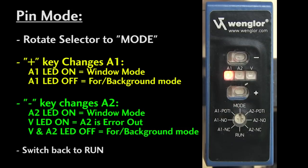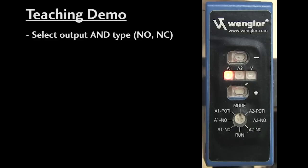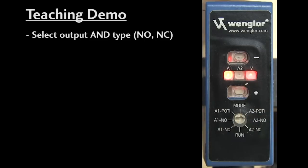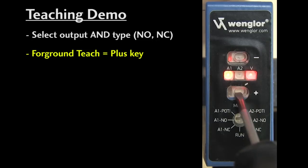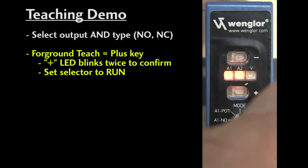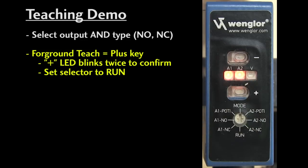Once you've selected the mode, now you teach it by selecting the output AND the type – normally open or normally closed. We set A2 to be foreground background mode in step 1. To teach it as a foreground object detector, just point the laser at the object you want to detect and press the plus key. The plus LED will blink twice to confirm. Set the selector back to run and now any object that comes closer than that distance will activate pin A2.